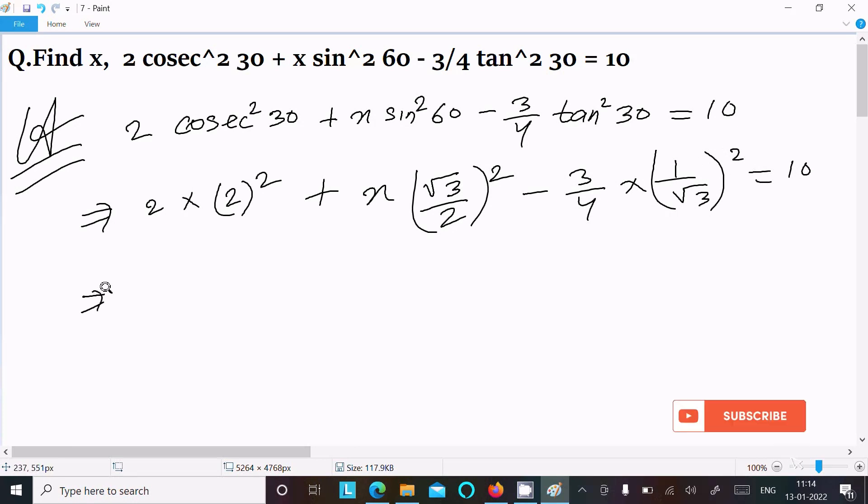So after that, if you calculate this one: 2 power 2 is 4, 4 into 2 is 8. And here we can write (√3)² is 3, 2² is 4, so we have 3/4 x. Then minus 3/4, and 1/√3 becomes 1/3 = 10.